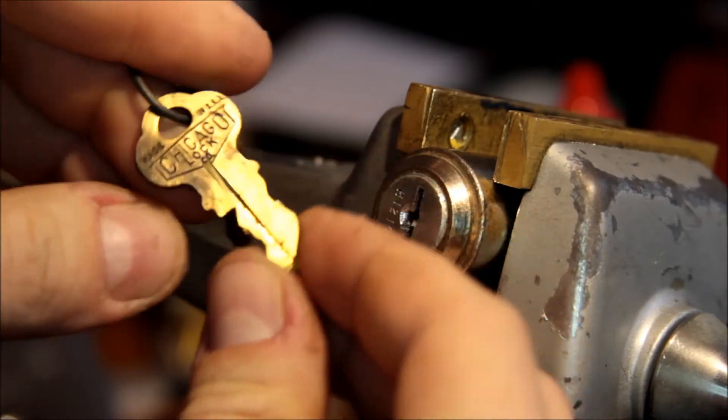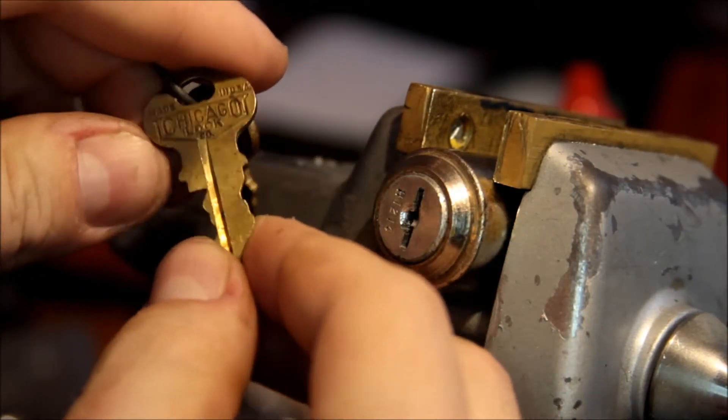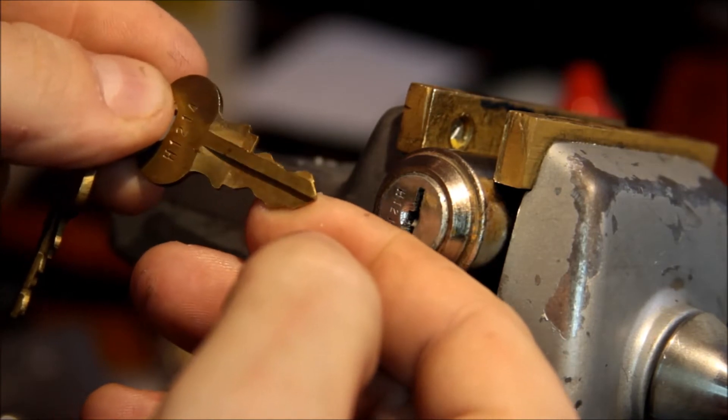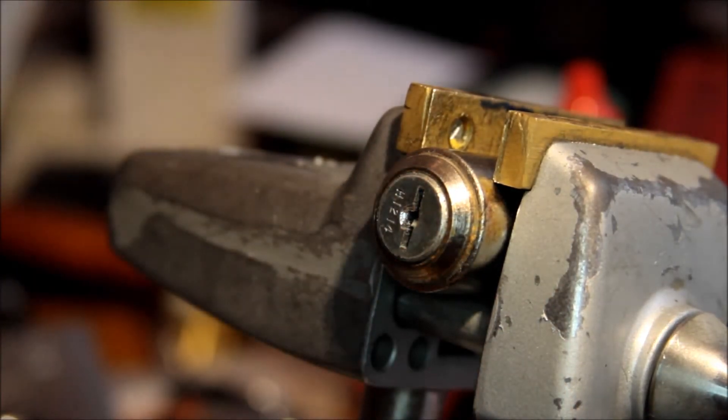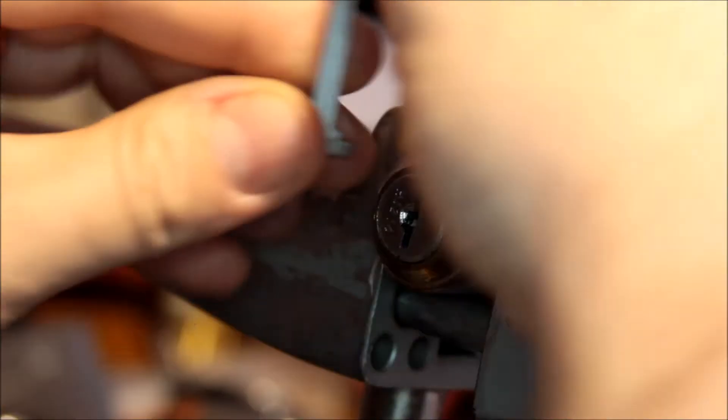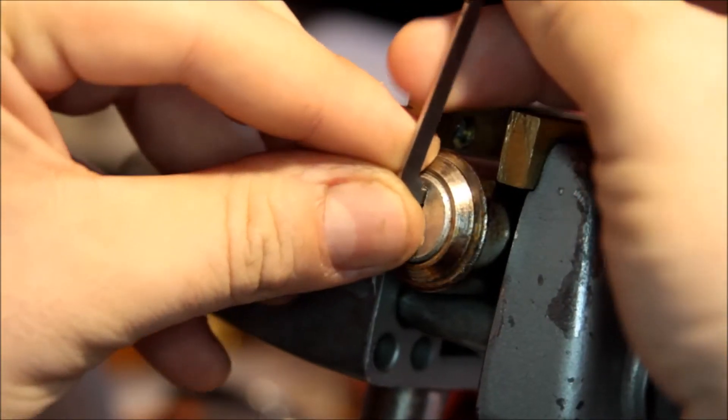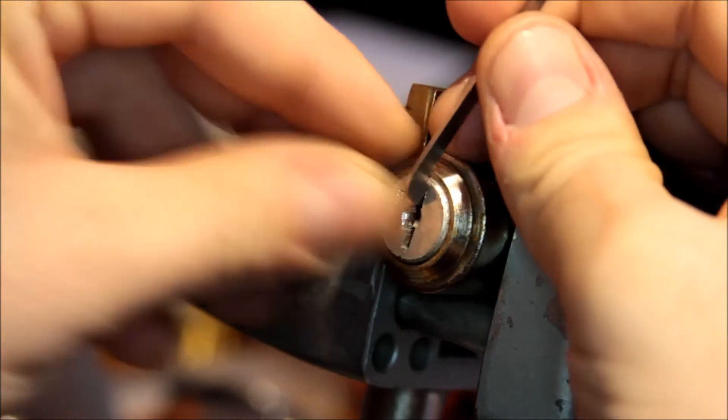It's a Chicago wafer tumbler lock, kind of a neat old thing. At least I assume it's somewhat old—the key looks kind of grungy. It turns both ways which is nice so I don't have to get in your way as much.